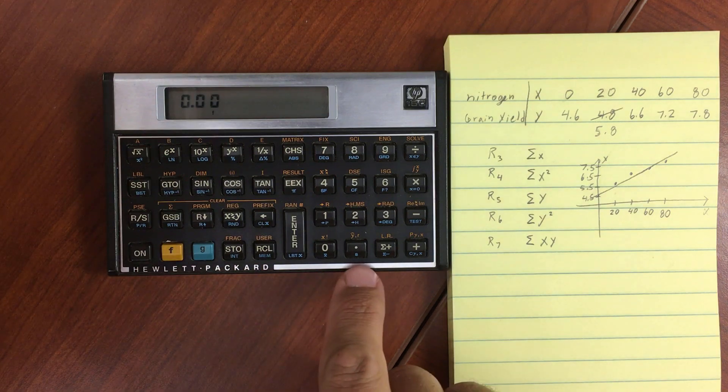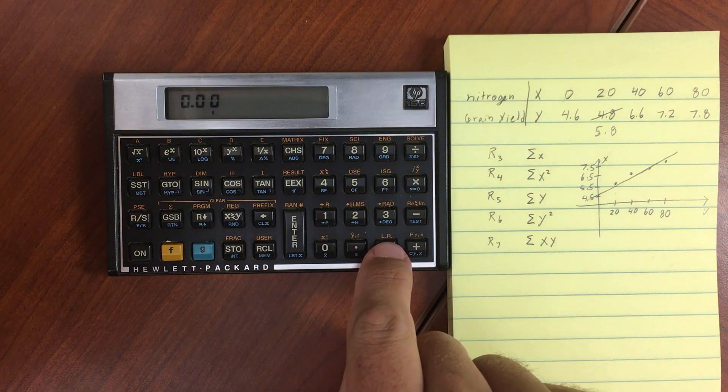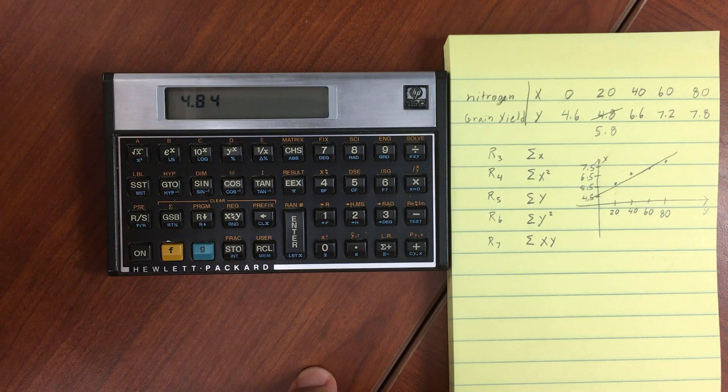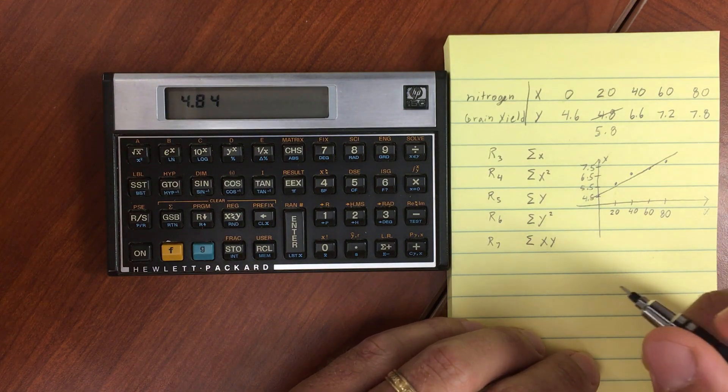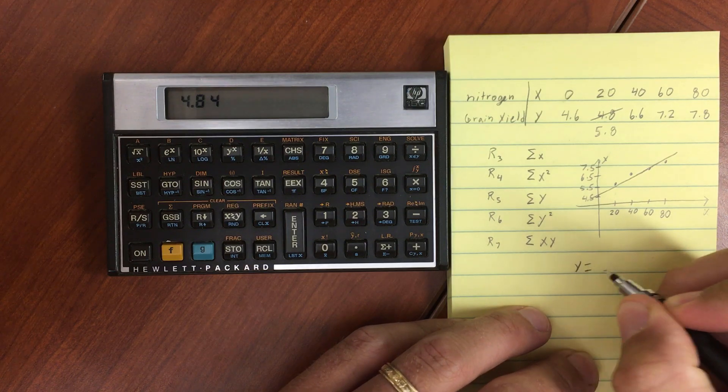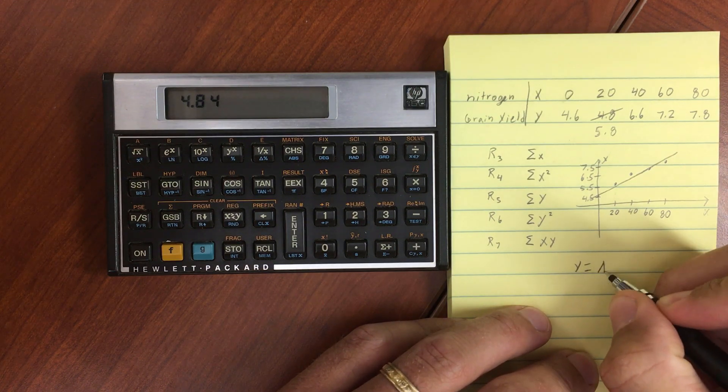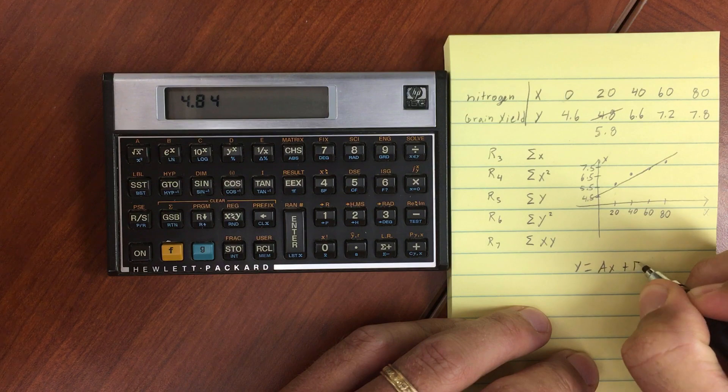Just hit gold or F, and then hit LR for linear regression. This is going to show us 4.84. It's putting it in point-slope form, the Y equals AX plus B form.